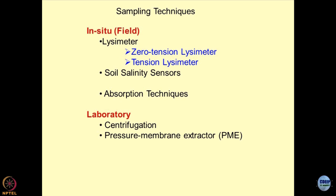For laboratory sampling techniques, centrifugation is the simplest approach — you take the sample in a glass tube or control volume and centrifuge it at very high speed, not just 50 g or 200 g, but millions of g values, with RPMs of the order of 1 lakh to 5 lakh RPM. These ultra-centrifuges are used to drain out pore solutions from in situ samples brought to the lab, which are then spun to expel the pore solution.